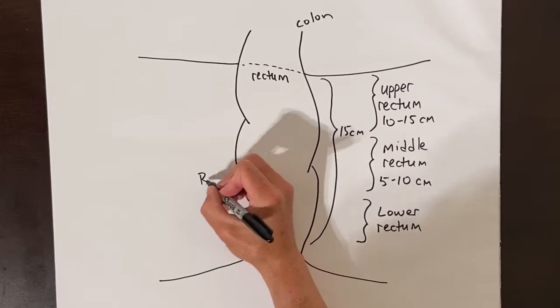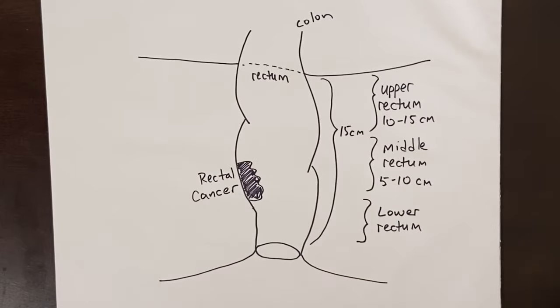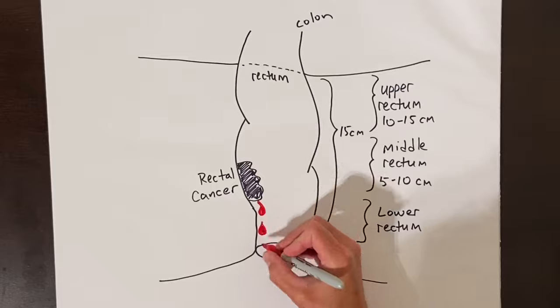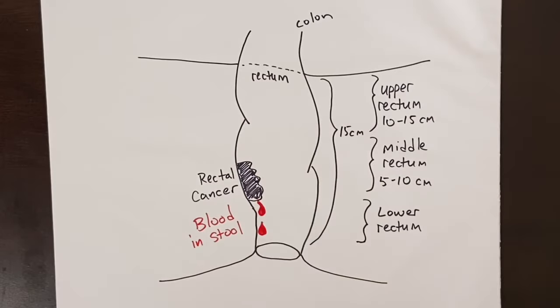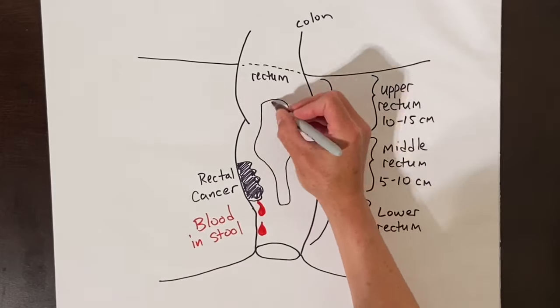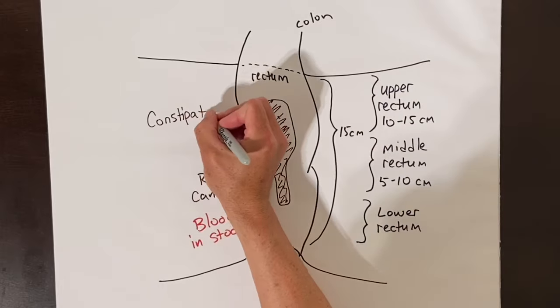Rectal cancer usually presents with blood in the stool that is bright red since it is so close to the anus. Sometimes people have a hard time passing stool or the stool is very thin because the lumen is narrow from the cancer.